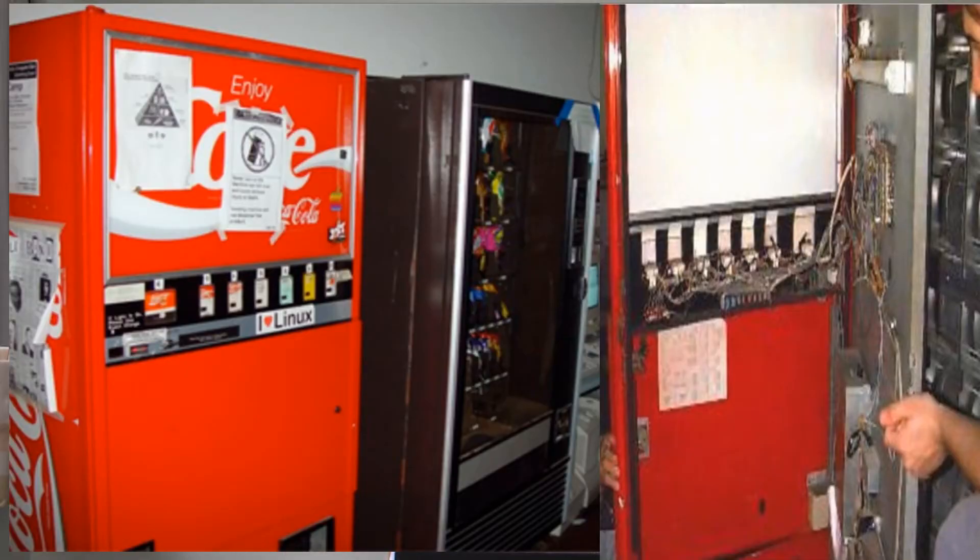1982. This is a picture of the world's first Internet connected device. I think this is Stanford University. If I'm wrong, I'm going to write the correct university down here. And this Coca-Cola machine was connected to the Internet and it would tell the owners of the machine the temperature of the drinks and it would tell them how many drinks were left, so they would know when to go and restock it. That's the first Internet connected machine.